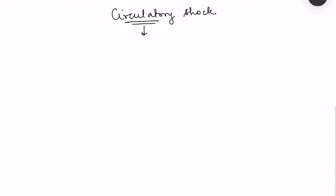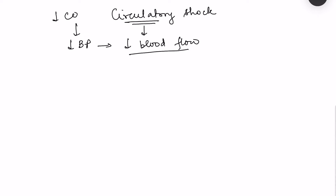As the name indicates, circulatory shock means there is some problem in circulation. Circulation is blood flow. So in circulatory shock there is decreased blood flow, and why does this decreased blood flow occur? It is because of a decrease in blood pressure, which basically occurs due to a decrease in cardiac output. This is the fundamental of circulatory shock.